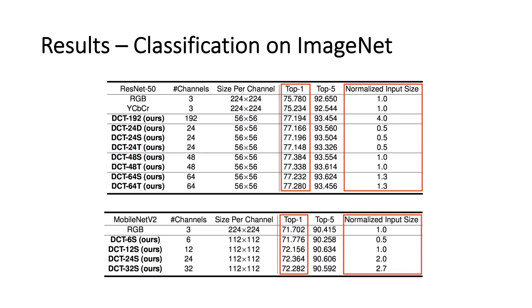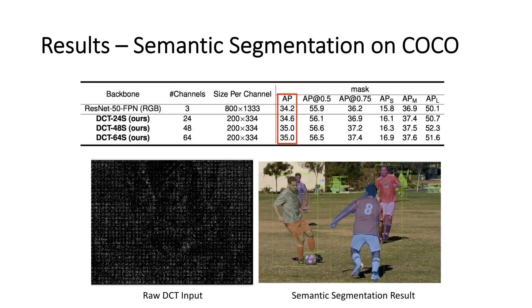Specifically, even with half input size, the proposed method still outperforms the ResNet-50 and Mask R-CNN baseline in the classification and semantic segmentation tasks, respectively. Thank you.